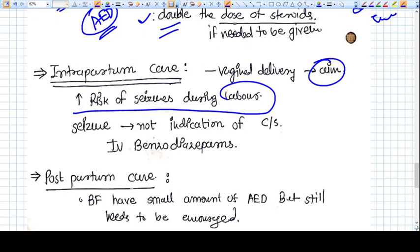If the patient is a well-diagnosed case of seizure or epilepsy and she is on a drug, and if she develops a seizure, if she throws a seizure during the delivery, during labor, then it's not an indication of cesarean section. It can be well managed by IV benzodiazepines.